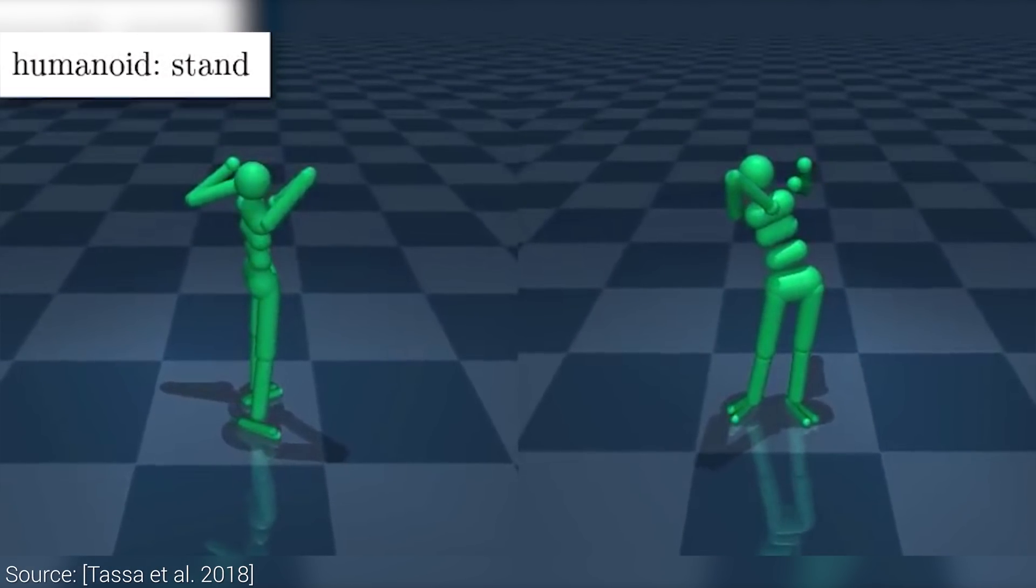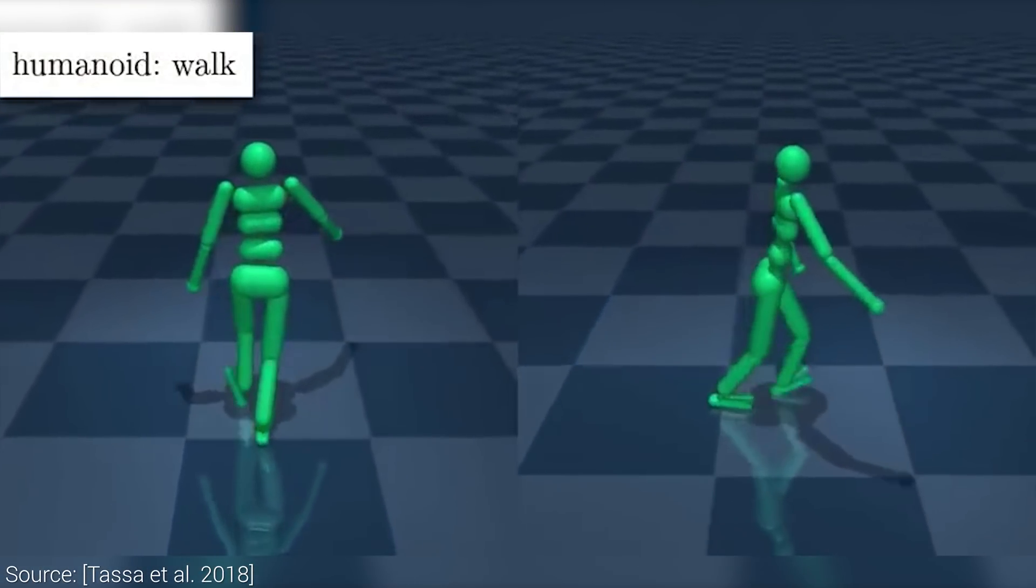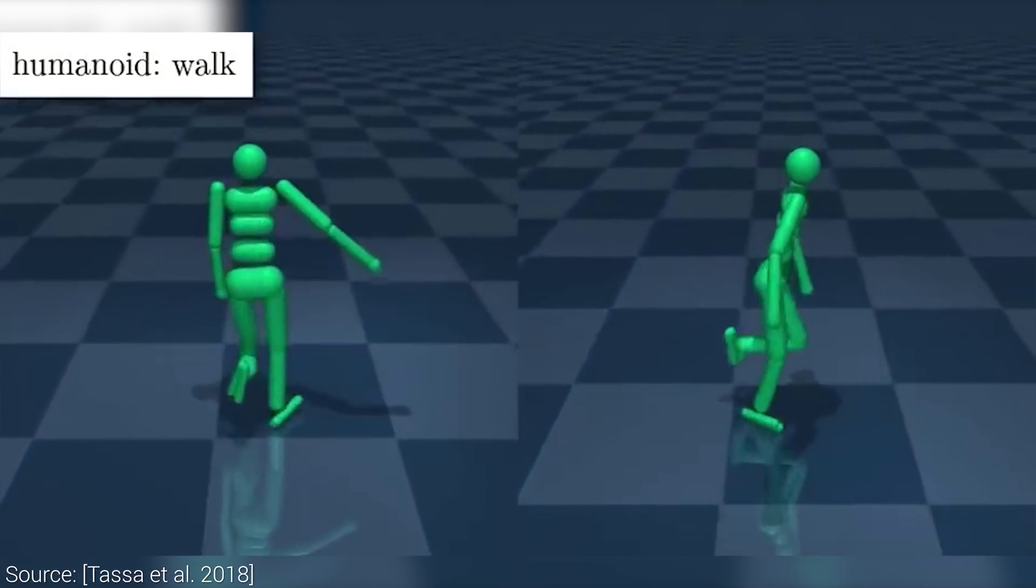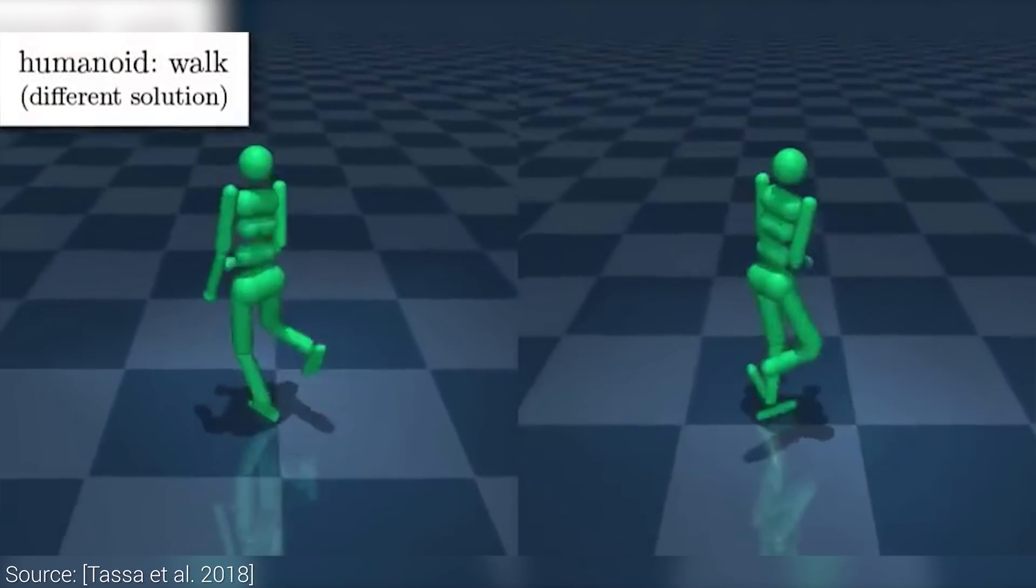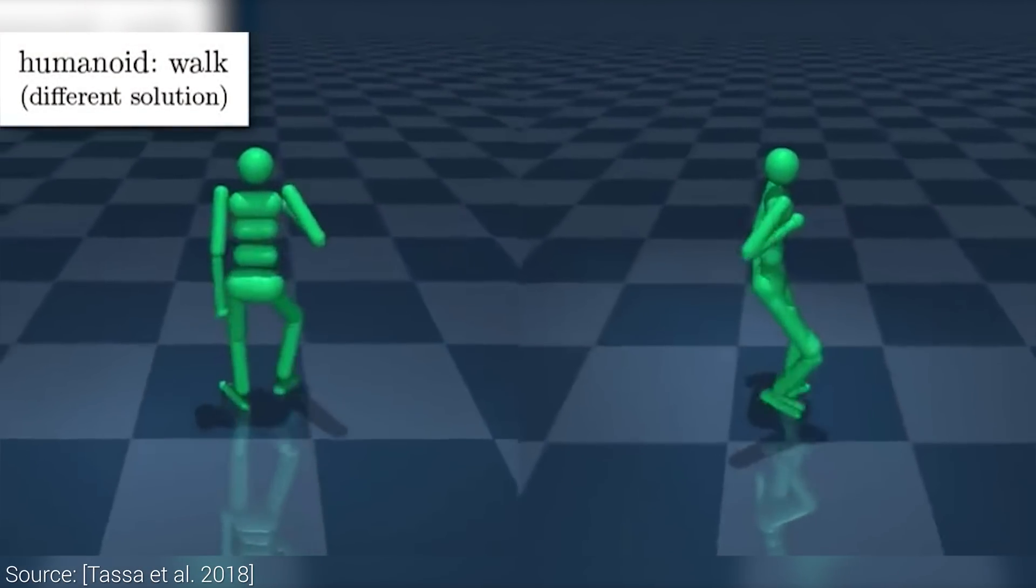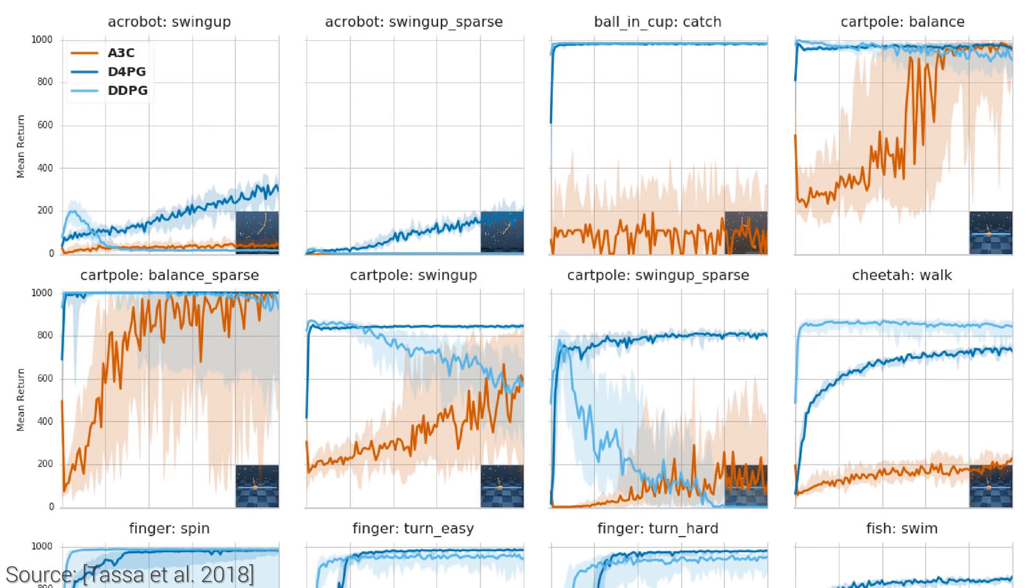Two, there are domains where the new control suite is a superset of Gym, meaning that it offers equivalent tasks, and then some more. And three, the action and reward structures are standardized. This means that the results and learning curves are much more informative and easier to read.